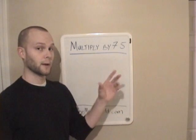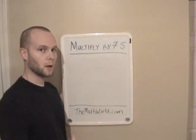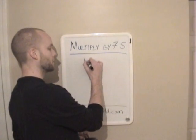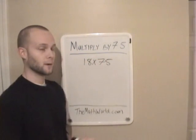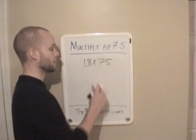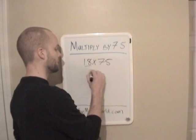The first one is going to be how to incorporate a new trick with 75. We'll start out with a small number then we'll get bigger. First number we're going to look at is 18 and we're going to multiply it by 75. The first thing you want to do is you want to divide this number 18 and you want to divide it by 4.